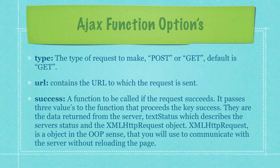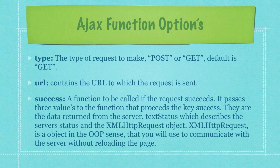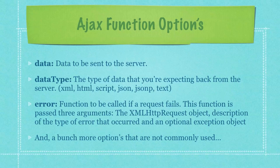Here I'll show you all the optional options for the Ajax function. First off, you have 'type', which refers to the type of request to make — either POST or GET — and the default is GET. 'URL' contains the URL to which the request is going to be sent; you would almost always fill in a value for this. The option 'success' tells you which function to call if the request succeeds. It passes three values to that function: the data returned from the server, a text status describing the server's status, and the XMLHttpRequest object. XMLHttpRequest is an object in the OOP sense that you use to communicate with the server without reloading your page. The 'data' option contains the data to be sent to the server.